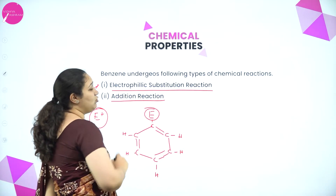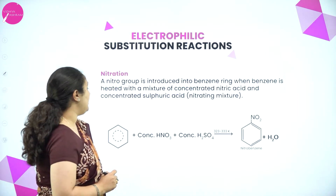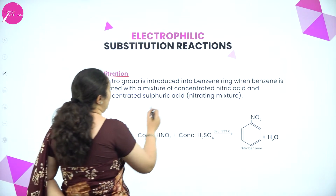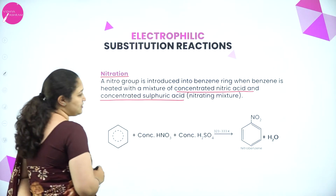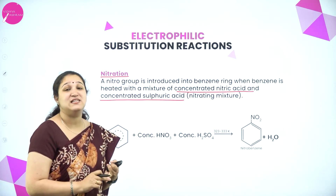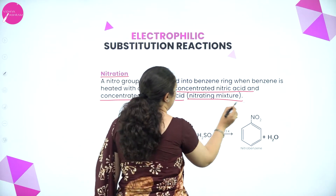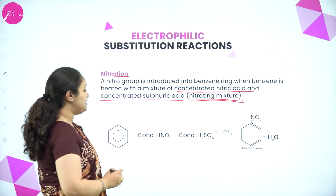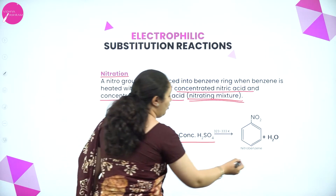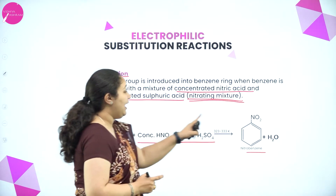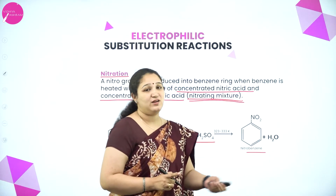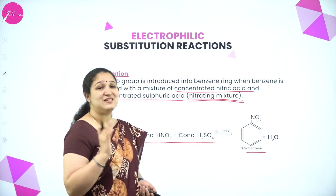Today we learn about the electrophilic substitution reactions. The first one is nitration. A nitro group is introduced into the benzene ring when benzene is heated with a mixture of concentrated nitric acid and concentrated sulfuric acid. Remember, concentrated sulfuric acid along with concentrated nitric acid is called the nitrating mixture. Benzene is mixed with both acids and heated at 323 to 333 Kelvin to give nitrobenzene. One hydrogen from benzene is substituted by the NO2 group, the electrophile being NO2+. The NO2 group gets substituted with removal of water.